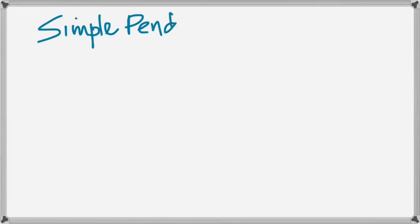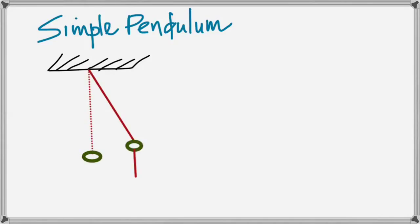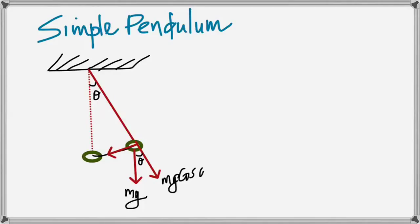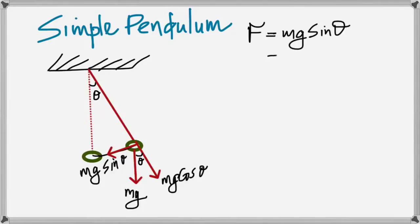For the simple pendulum, the string is inelastic and the mass is a point mass. Weight mg acts vertically downwards and is resolved into two components: mg cos θ along the string, and mg sin θ perpendicular to it. It is mg sin θ that is responsible for the oscillations. Technically the force should be written as −mg sin θ because it is opposite to the displacement X.